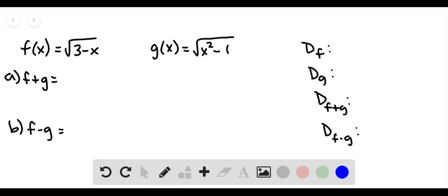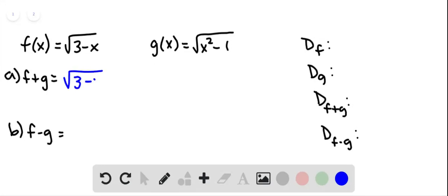Here we have functions f and g. Let's start by adding them. So f plus g would be the square root of 3 minus x plus the square root of x squared minus 1. And these are not like terms, there's really nothing we can do to combine those together.